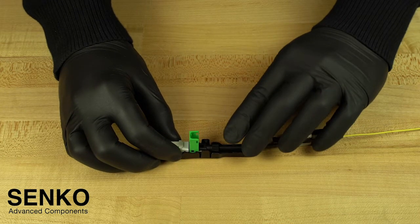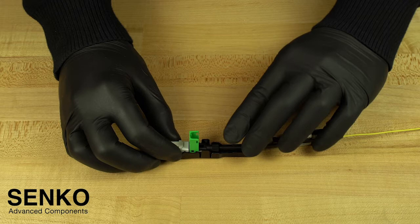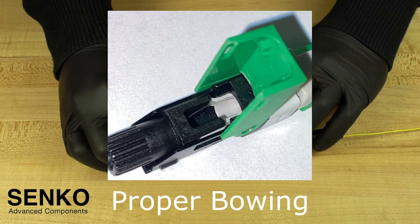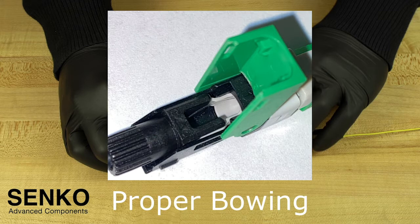If there is any large bowing in the fiber before this point, stop, remove the fiber, and try again. However, when the assembly clicks into place, there should be a slight bow in the fiber. This is a good thing.